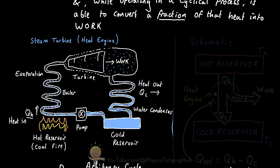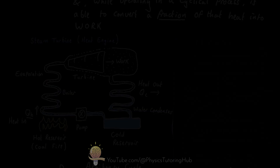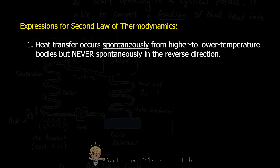In both examples — the gasoline engine and the steam turbine — it is impossible to extract all of the heat from the hot reservoir and convert it entirely into work. There must be some leftover heat to transfer into the cold reservoir, in other words the outside environment. This is one of the expressions of the second law of thermodynamics. The most intuitive expression is that heat transfer occurs spontaneously from higher to lower temperature bodies, but never spontaneously in the reverse direction.